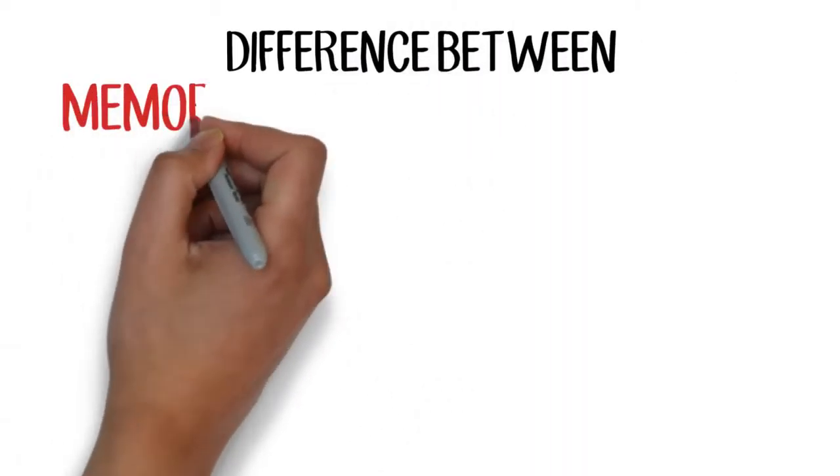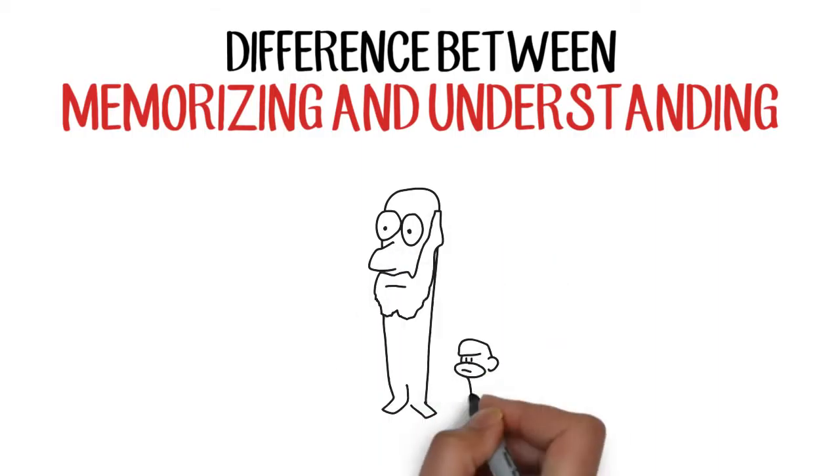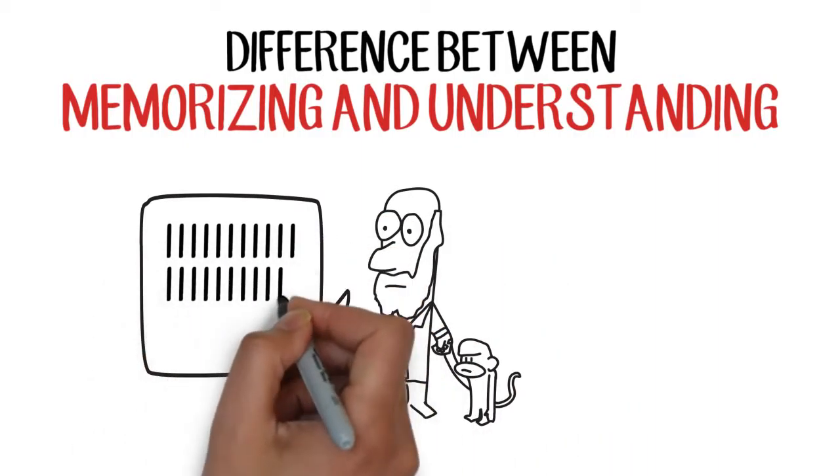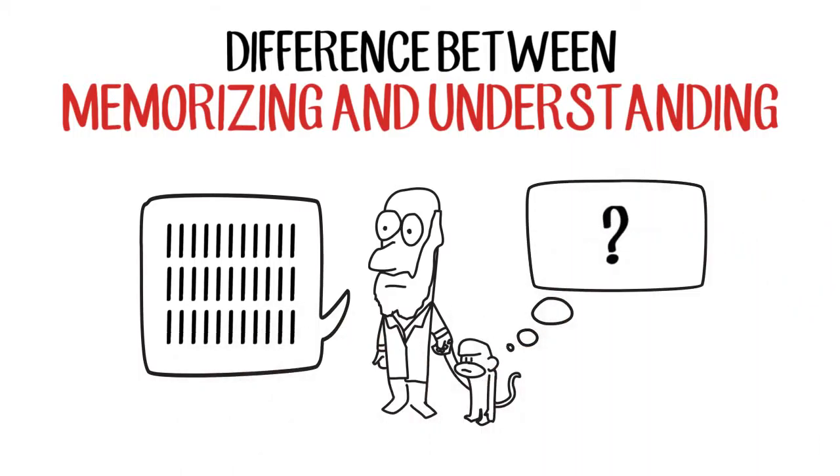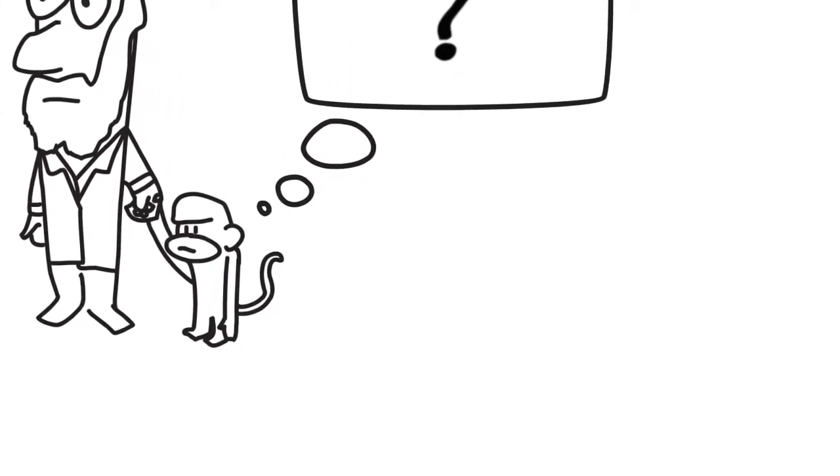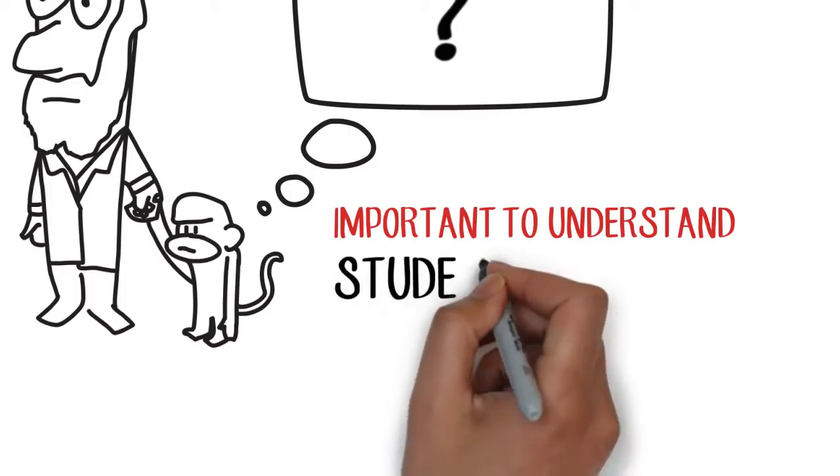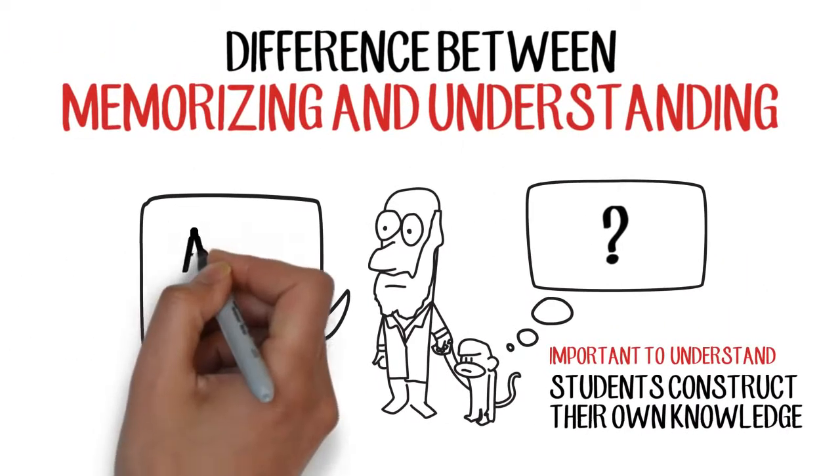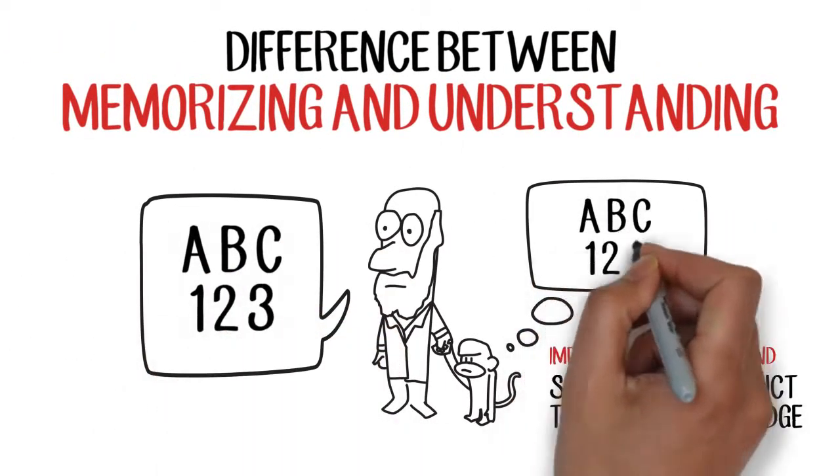It's also important to recognize the difference between memorization and understanding. Typically, we tend to ask kids to regurgitate information. That doesn't necessarily mean that they actually understood the material. Can we find better ways of actually seeing if they've understood the material we're asking them to learn? It's important to understand that students construct their own knowledge. How do we actually get them to construct the knowledge that we want them to learn?